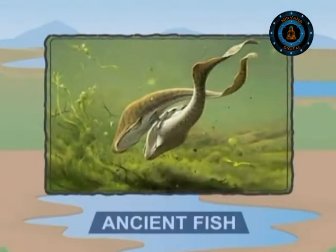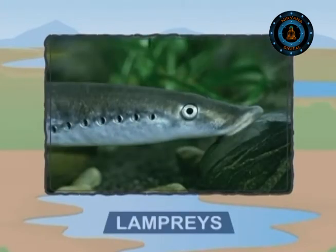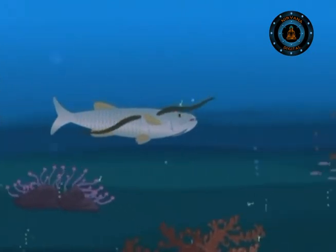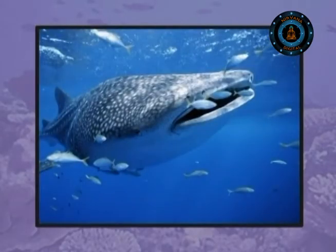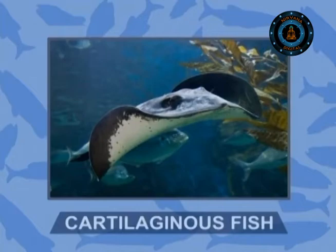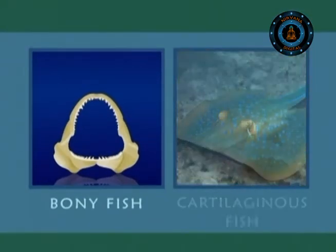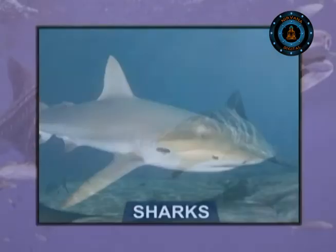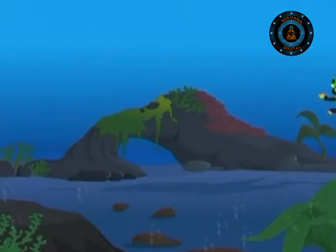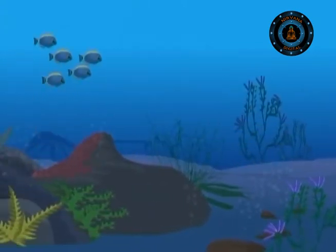Rivers and lakes shelter some of the most ancient types of fish on Earth. Lampreys are the oldest of the lot — they don't have jaws and feed by attaching to fish and rasping at their flesh with a sucker-like mouth. Most fish have jaws and belong to two main groups: bony fish and cartilaginous jawed fish. Bony fish have skeletons made of bones, while cartilaginous jawed fish like sharks and rays have skeletons made of cartilage. Bull sharks are one of the few human-eating species that swim far up major rivers, including the Mississippi.